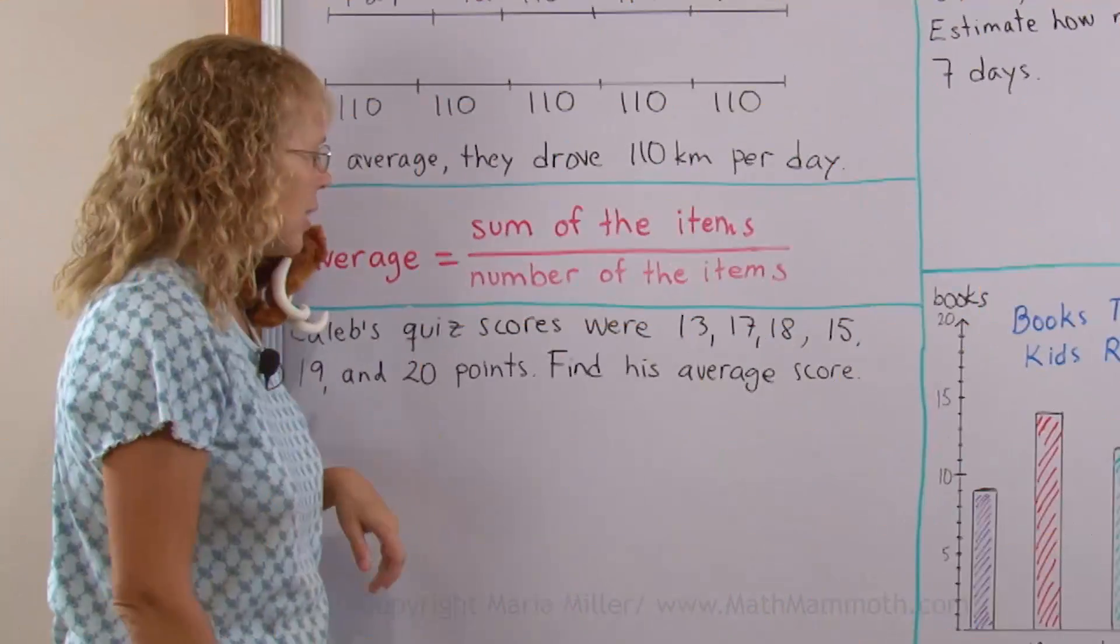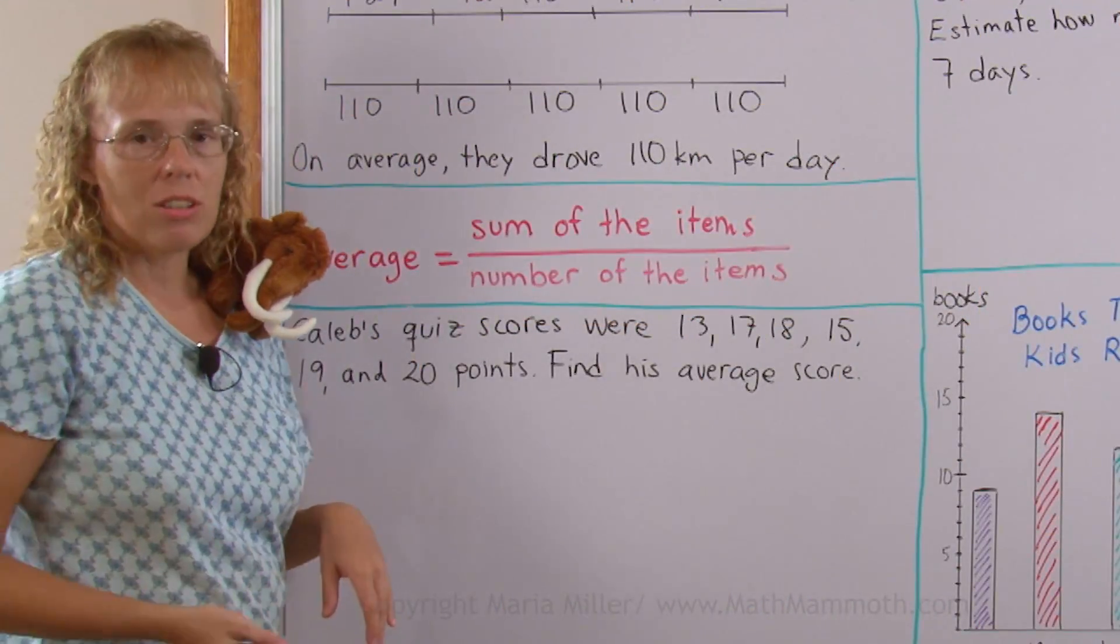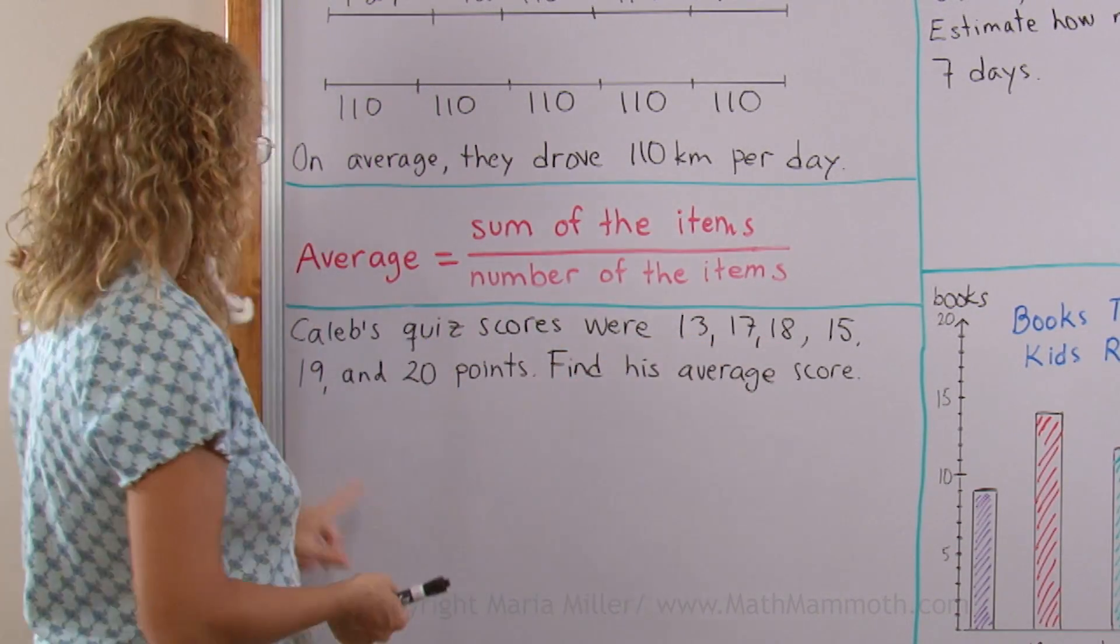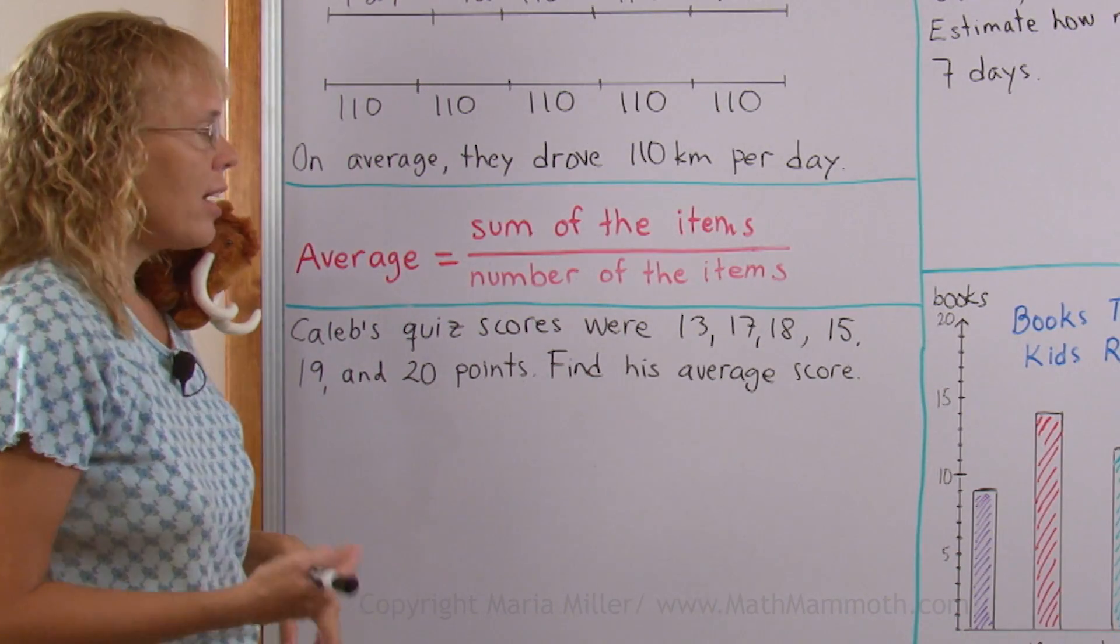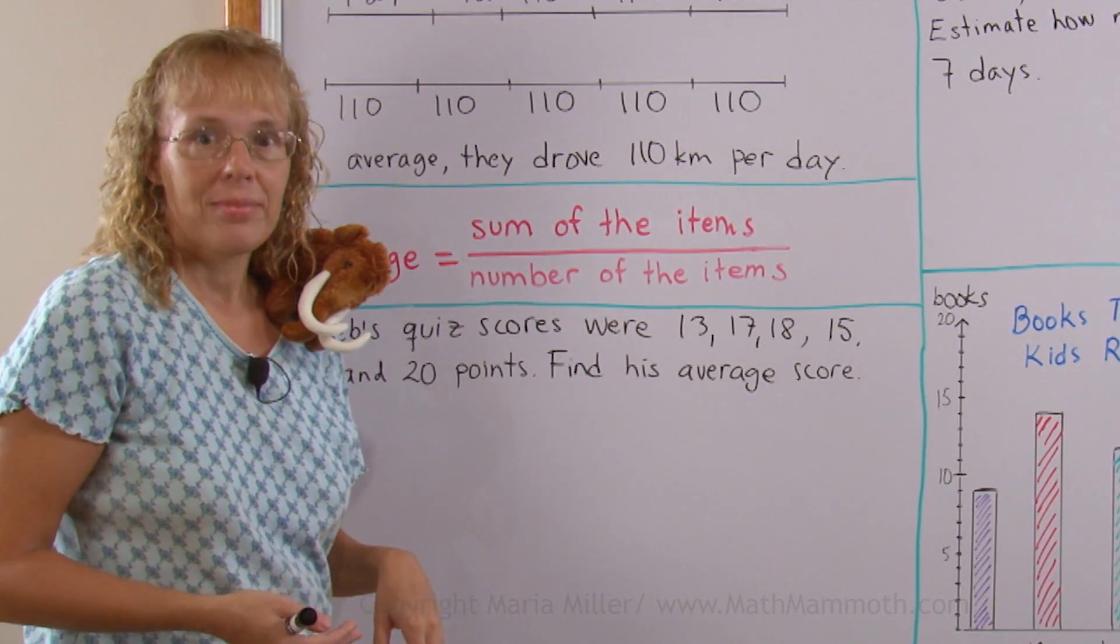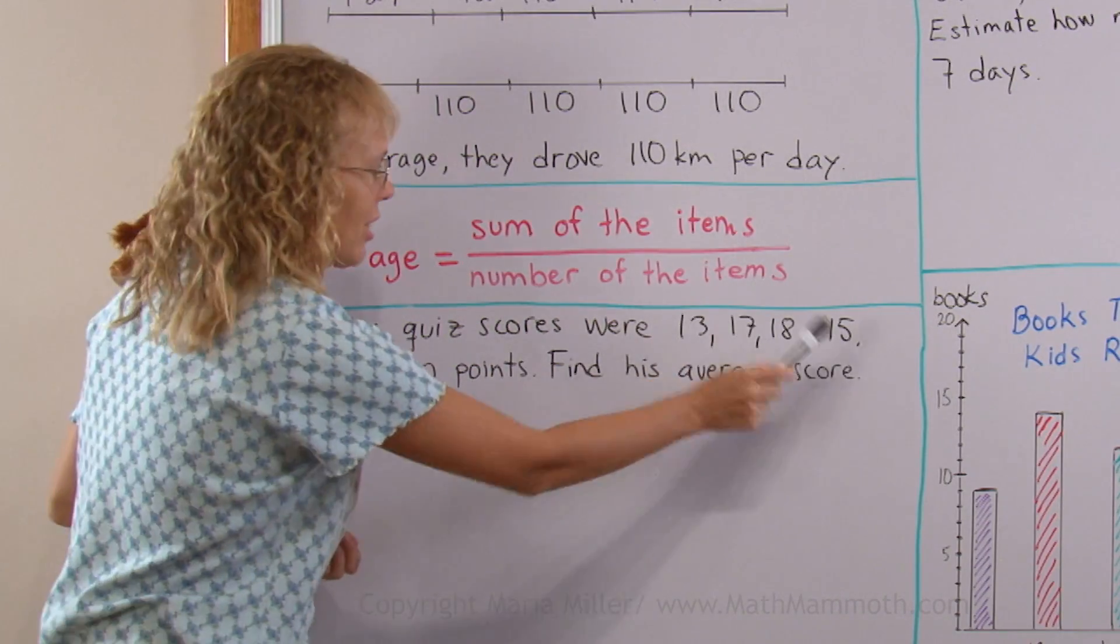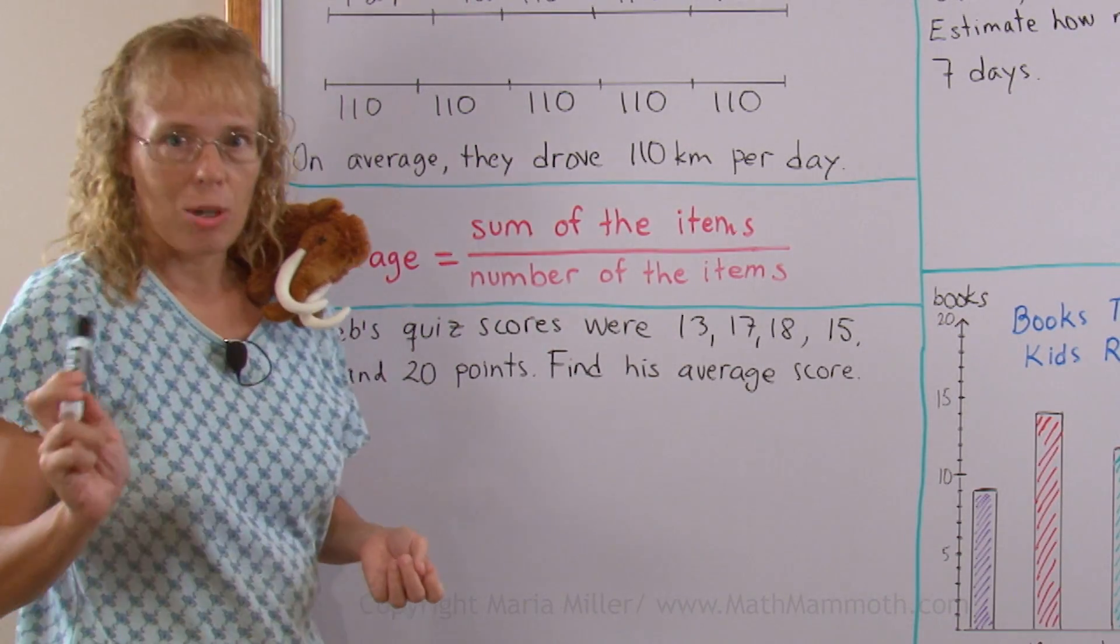Let's look at an example. Caleb's quiz scores in math were 13, 17, 18, 15, 19 and 20 points. So find his average score. Very simple. All we need to do is find the sum or add all these numbers and divide by how many there are.